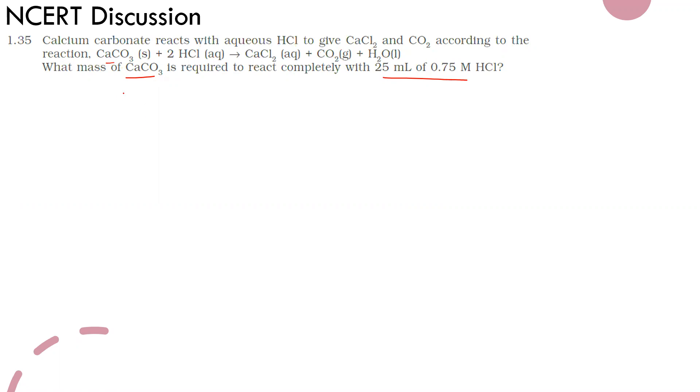From this equation, we can say that 2 moles of HCl react with 1 mole of CaCO3. From here, I can say that 1 mole of HCl reacts with 1/2 mole of CaCO3.